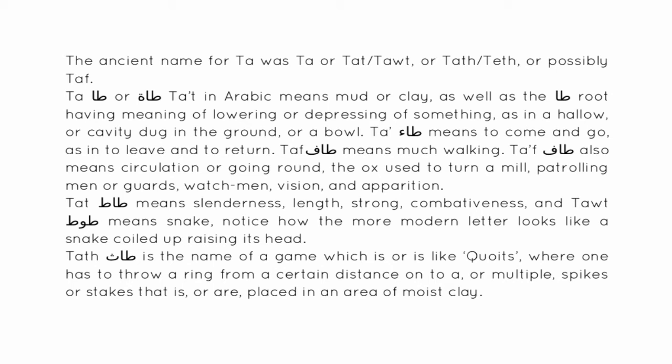Ta'af also refers to patrolling men or guards, watchmen, and vision and apparition. Ta' alif ta' means slenderness, length, strong, and combativeness. Ta' wa ta' means snake — notice how the modern letter looks like a snake coiled up raising its head. Ta'ath is also the name of a game like coits, where one throws a ring from a distance onto spikes placed in an area of moist clay.